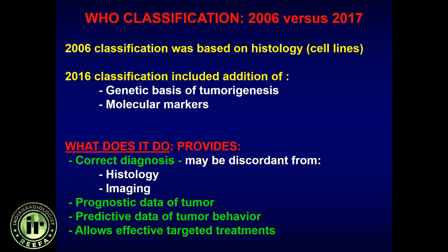One of the things we'll be talking about is what has changed in the classification. In 2006, it was almost entirely based on histology or the cell lines of the tumor. Whereas in 2016, the WHO came up with a new classification which added molecular markers or genetic markers associated with the tumor. The advantage of adding that was to get a corrected diagnosis, which may differ from histological appearance, and more importantly, to better predict overall outcomes of treatment.